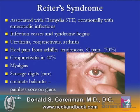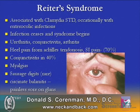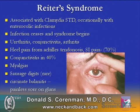There's also significant heel pain in 70% from Achilles tendinosis, and there's also SI pain associated. 40% of patients will develop conjunctivitis, as noted in this eye exam seen on the right. Myalgias are common. Sausage digits or large swollen fingers are very rare. Circinate balanitis is a painless sore on the glans penis, which is quite common with Reiter's.